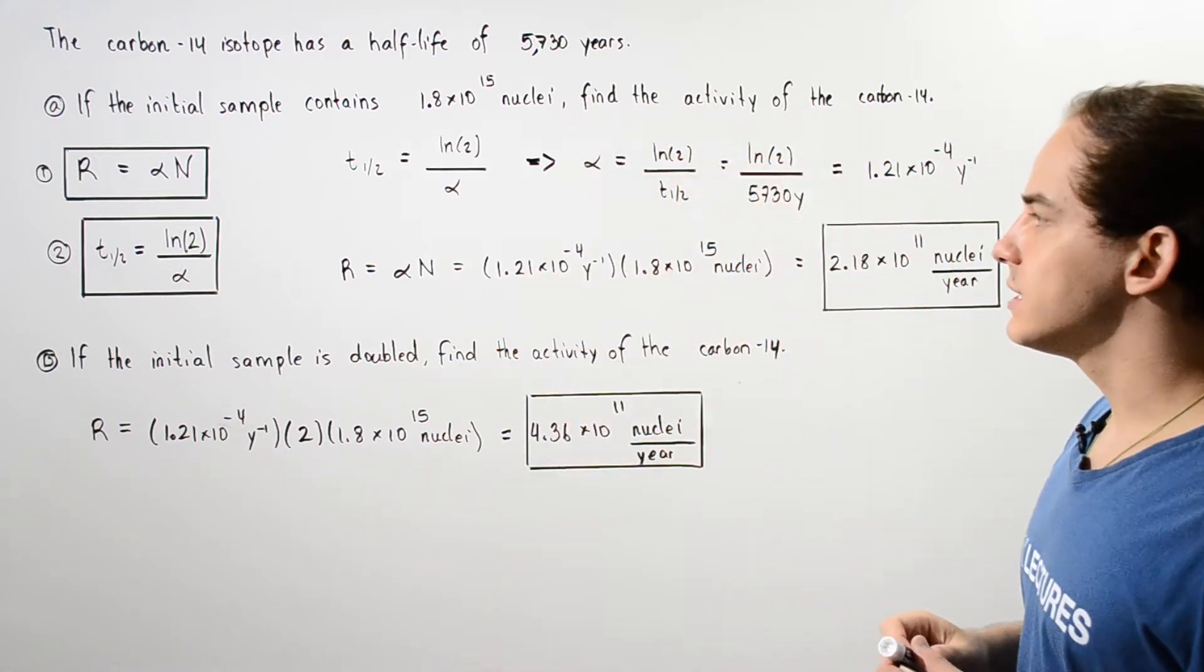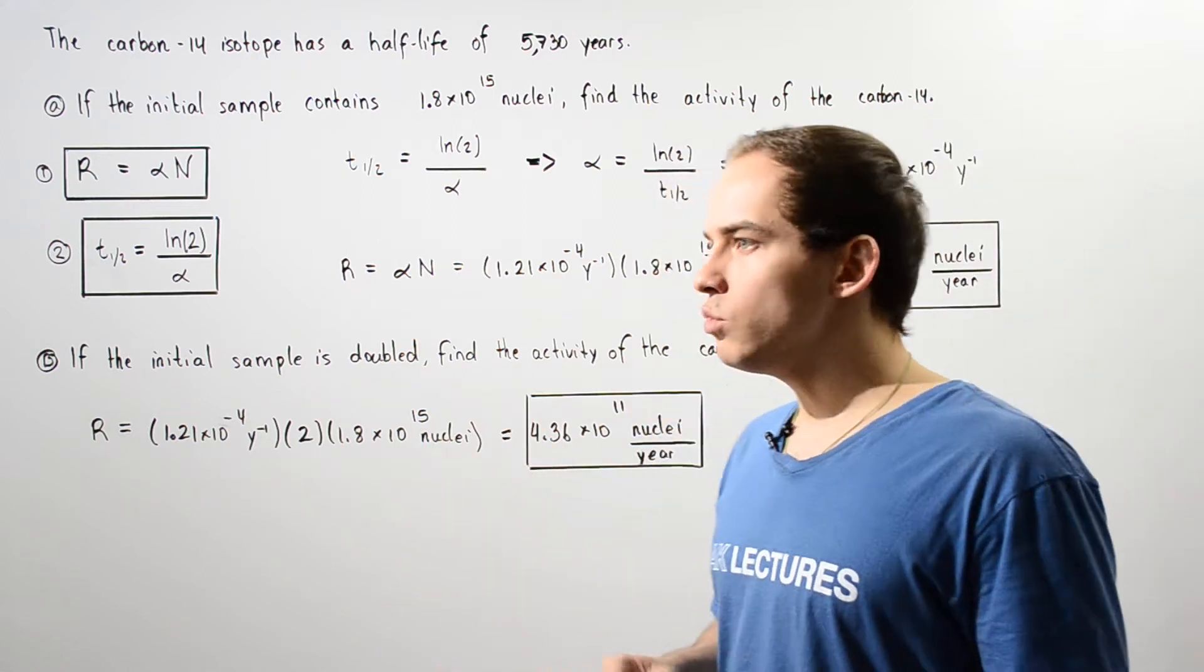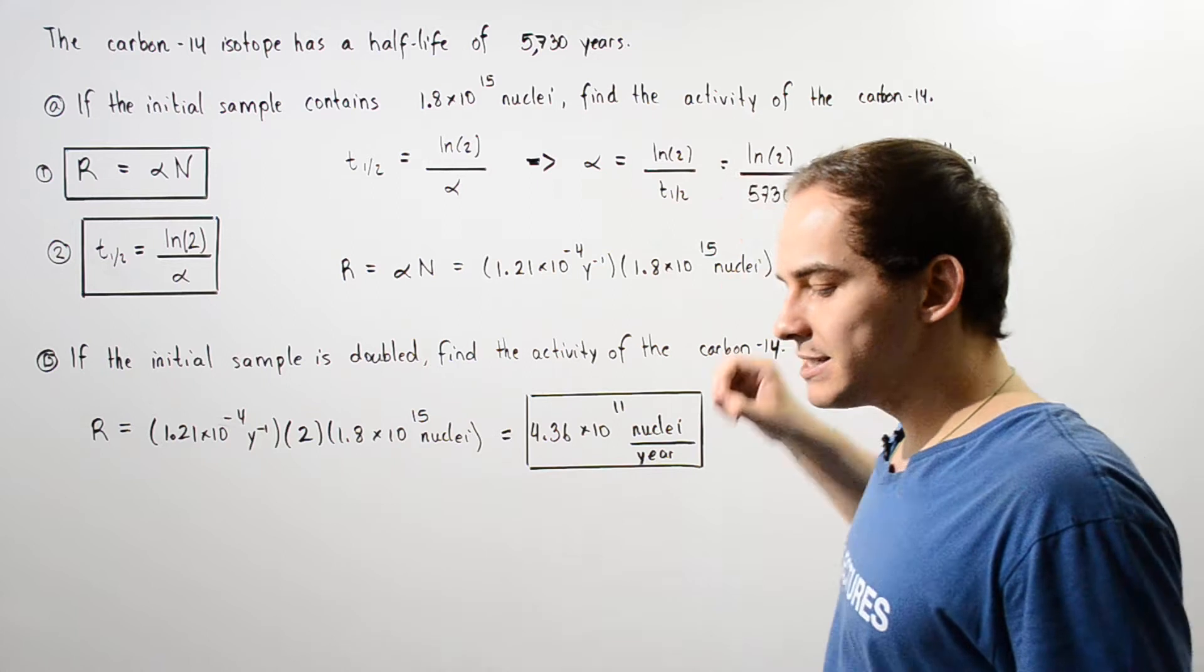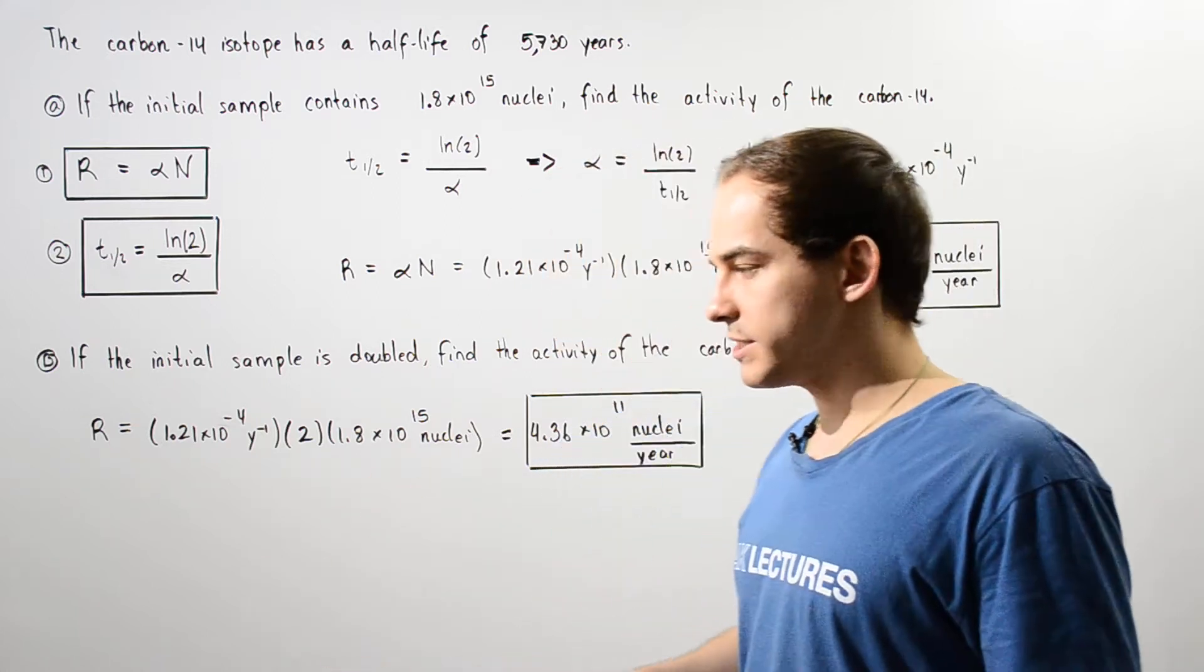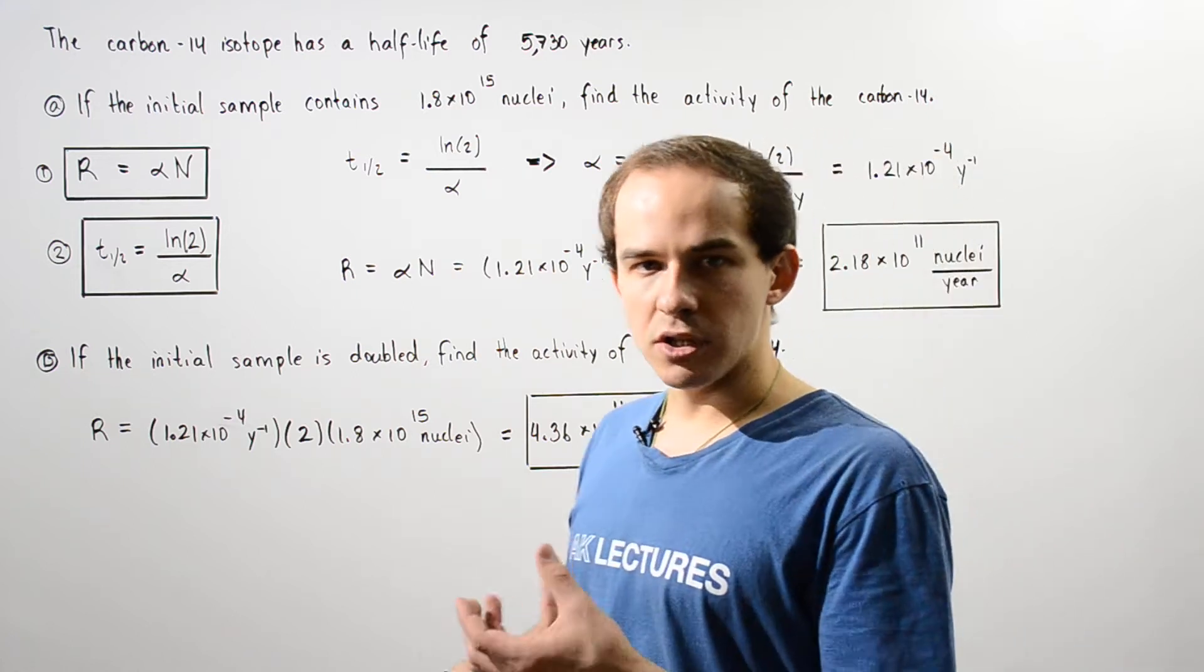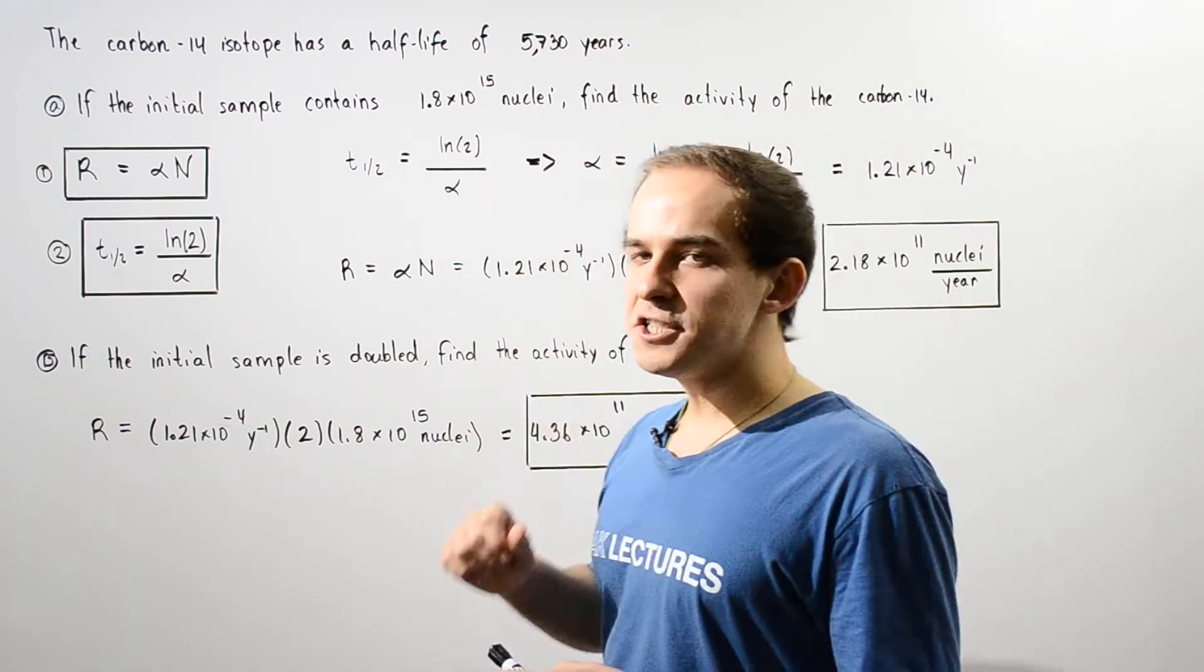In Part A, if the initial sample contains 1.8 times 10 to the 15 nuclei of carbon-14, find the activity of this isotope. In Part B, if we double that initial amount, find the new activity.